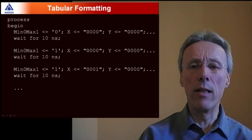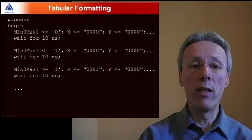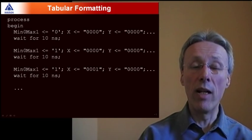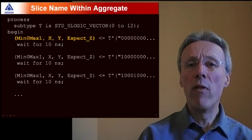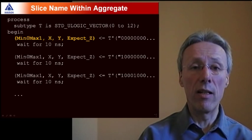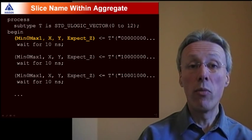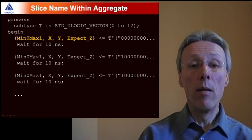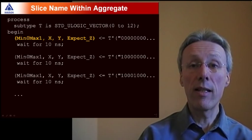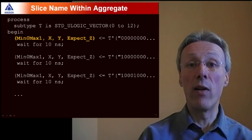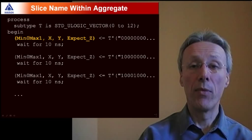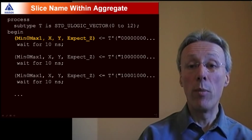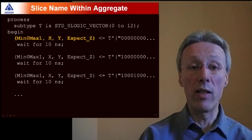However that's not really particularly elegant and it would be much nicer if we could assign all of the signals, the min zero max one x and y, in a single assignment. Well you could try to do that in VHDL but you run into problems due to some inflexibility with the aggregate in VHDL and that situation is much improved in VHDL 2008 because now we can include slice names within aggregates. So have a look at this code. Here on the left hand side of each of our signal assignments we've built up an aggregate by aggregating together all of the signals that we want to assign and then on the right hand side of the assignment we've built up a long vector that we can use to assign values to those signals.